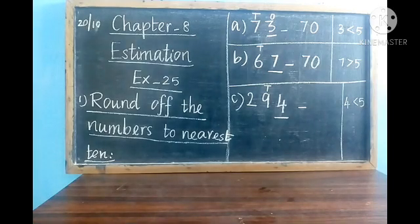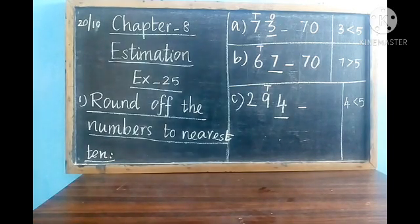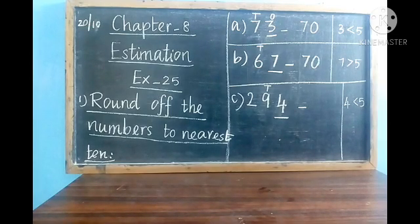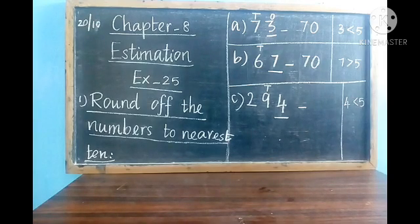The answer for B is 70. In the rough column you can write with pencil: for the A sum, 3 is in the ones place — as 3 is less than 5, we write the tens as 7. For the B sum, 7 is greater than 5, so 6 is in the tens place and the next 10 of 6 is 7, so the answer is 70.